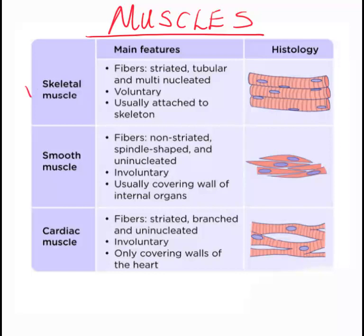Skeletal muscles — these are fibres. They are striated, they are tubular, and they are multinucleated, meaning they have a lot of nuclei. They are voluntary, meaning they move, and usually they attach to the skeleton. That is what we call skeletal muscles, and this is their structure.